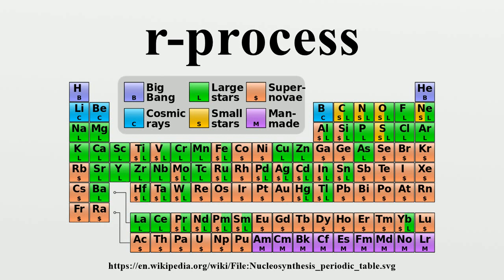The other predominant mechanism for the production of heavy elements in the universe is the S process, which is nucleosynthesis by means of slow captures of neutrons, primarily occurring in AGB stars. The S process is secondary, meaning that it requires pre-existing heavy isotopes as seed nuclei to be converted into other heavy nuclei. Taken together, these two processes account for a majority of galactic chemical evolution of elements heavier than iron.